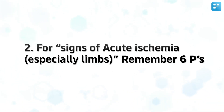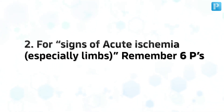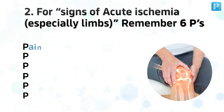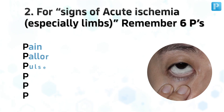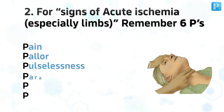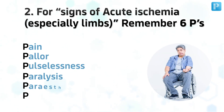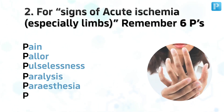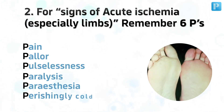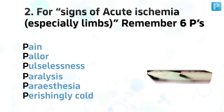Number 2. For signs of acute ischemia, remember 6 Ps: Pain, pallor, pulselessness, paralysis, paresthesia, perishingly cold.